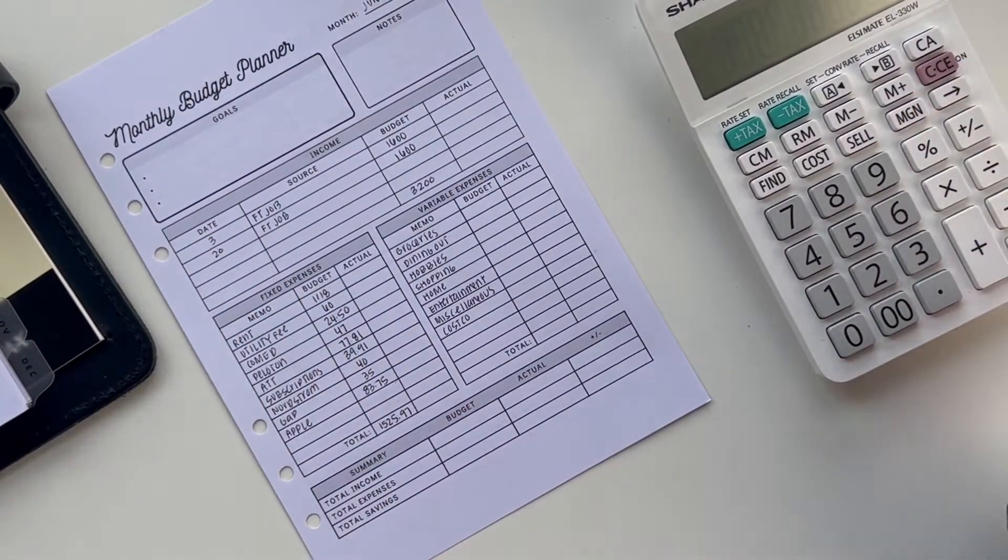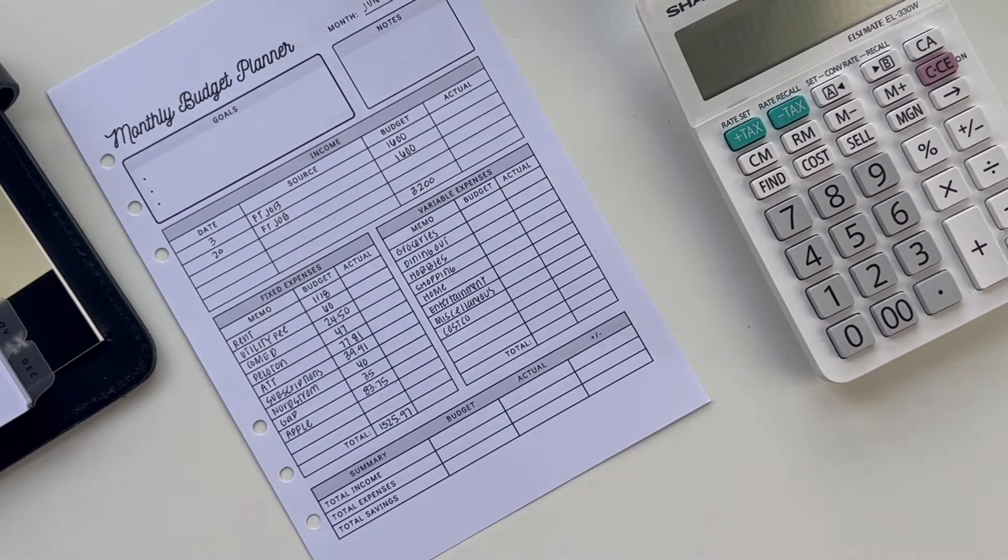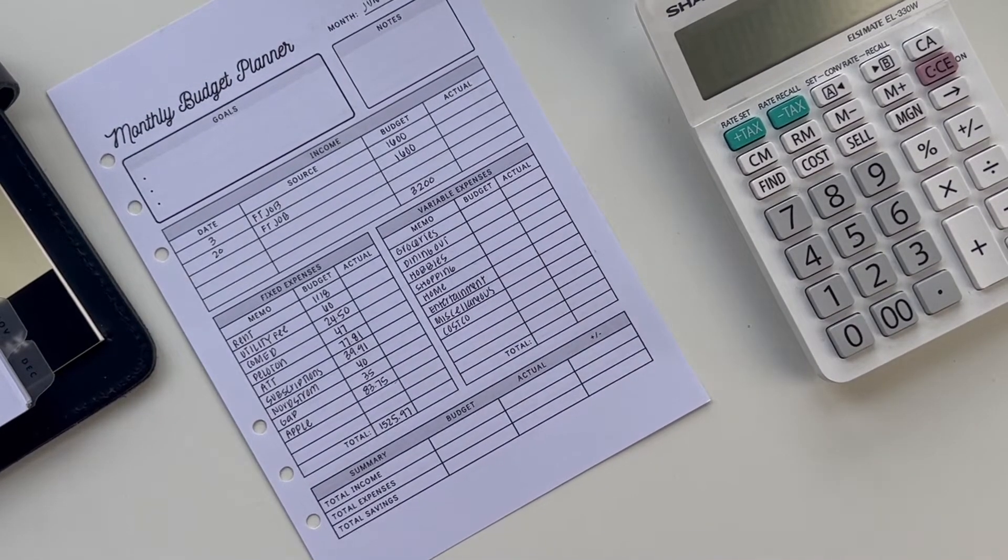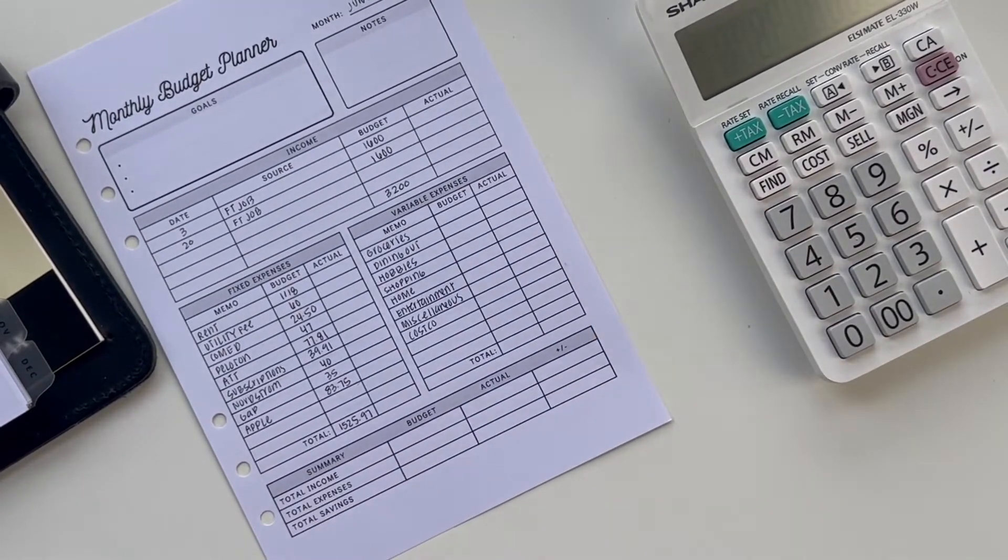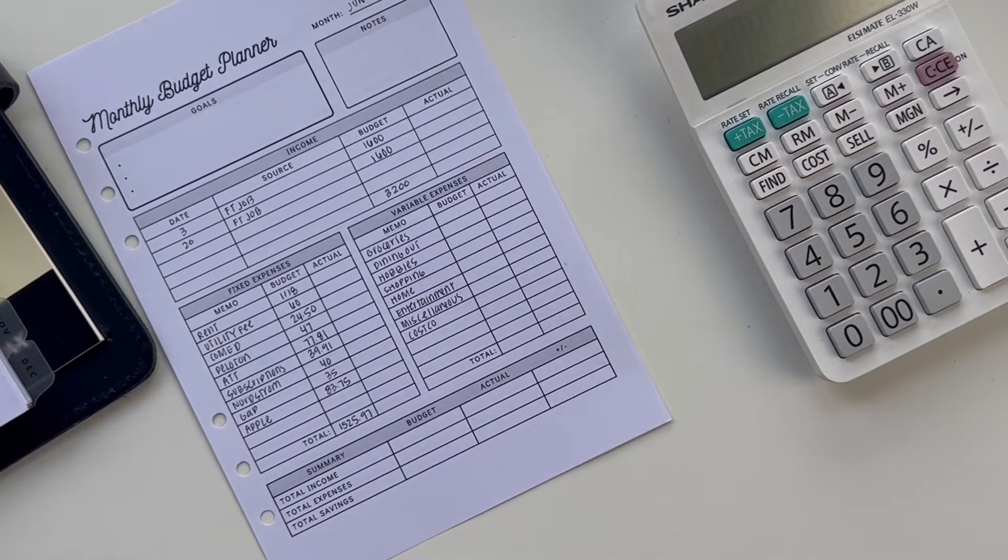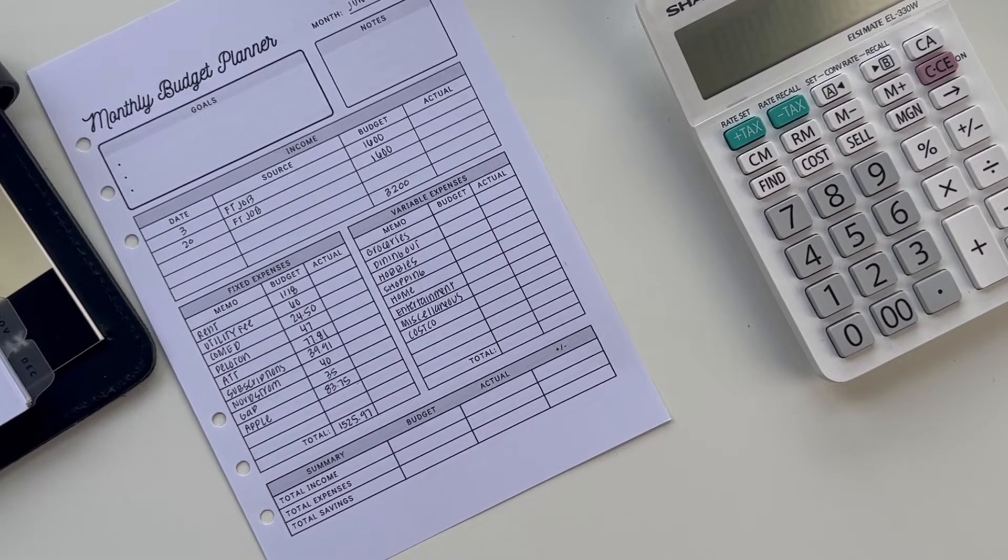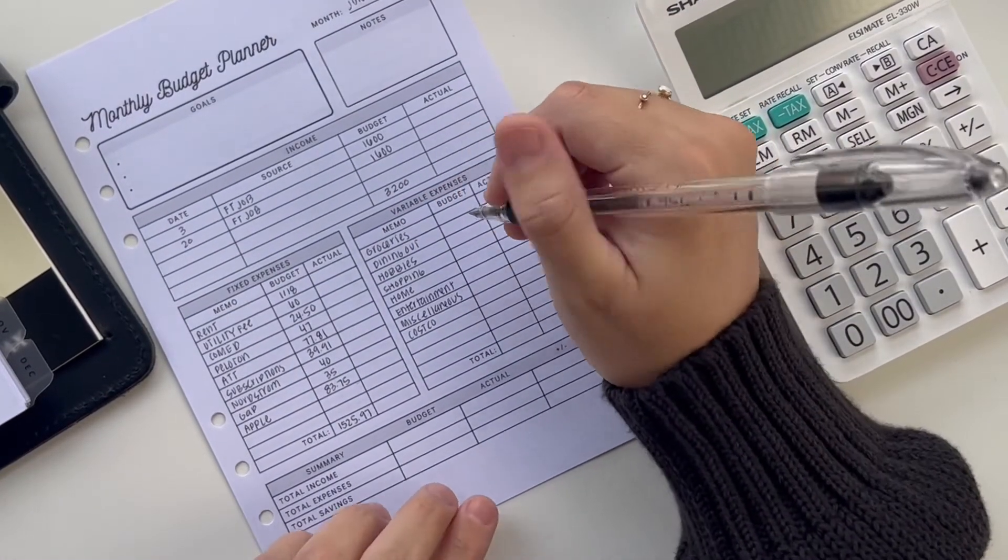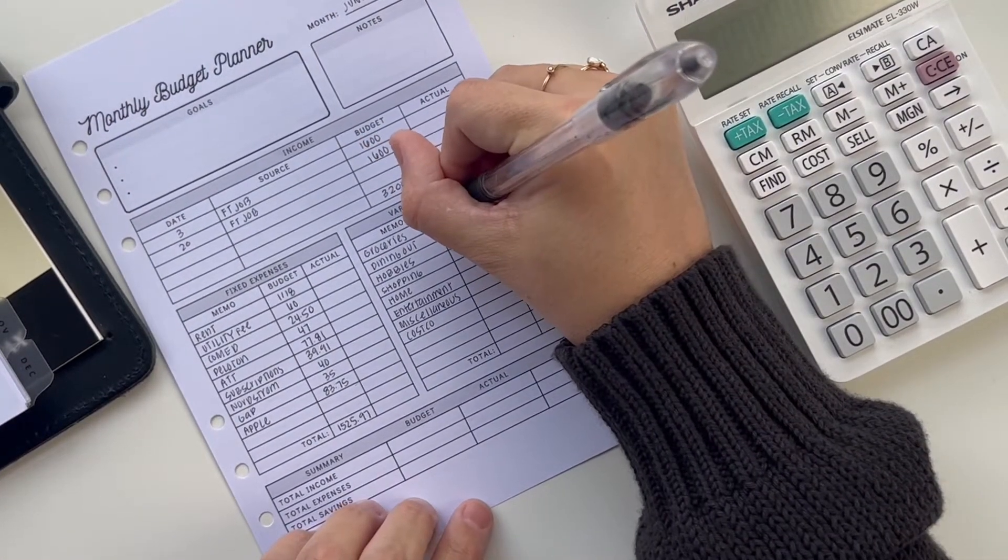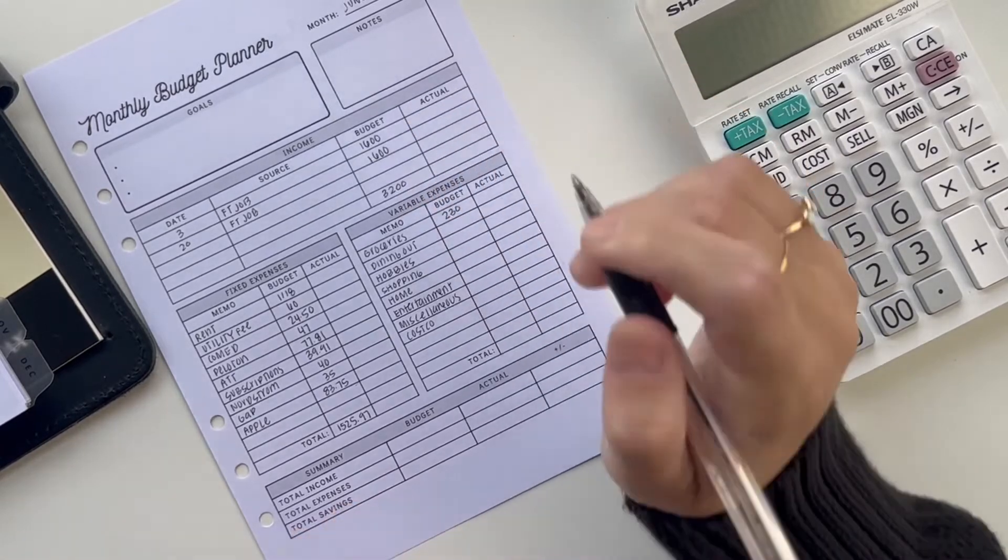This is the part I always struggle with - the variable expenses. For groceries, I think I'm going to be over budget for the month of May but just by a little bit. We will be doing a lot of eating out in June so I'm actually going to decrease my grocery budget from $240 last month to $230, just decreasing it a tiny bit.